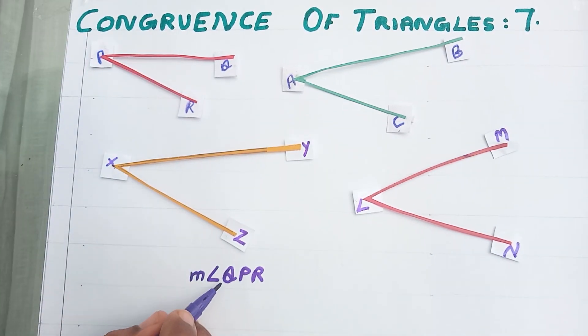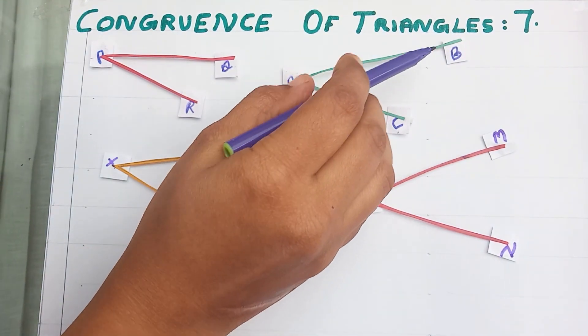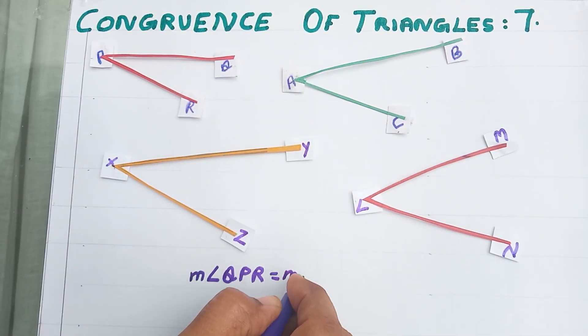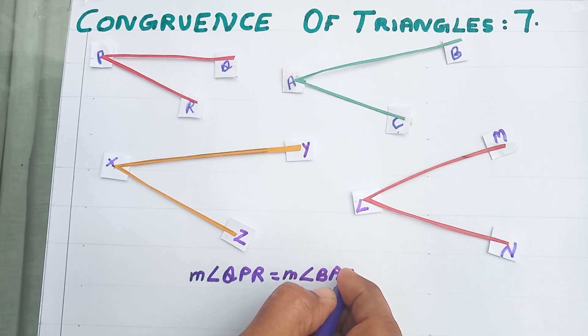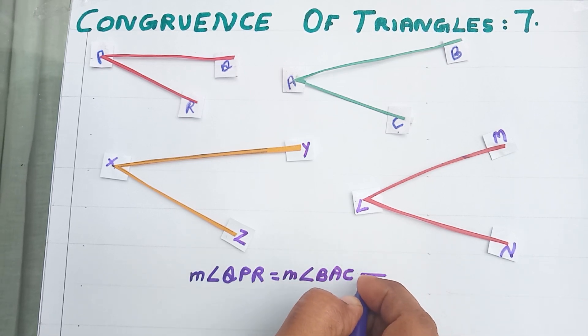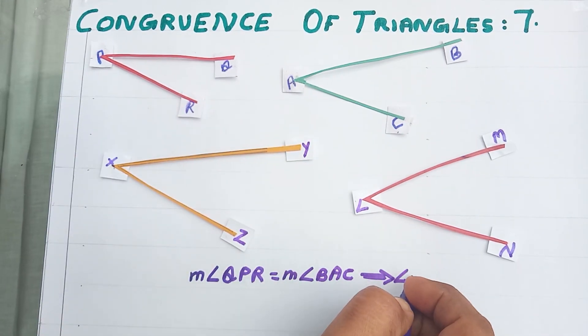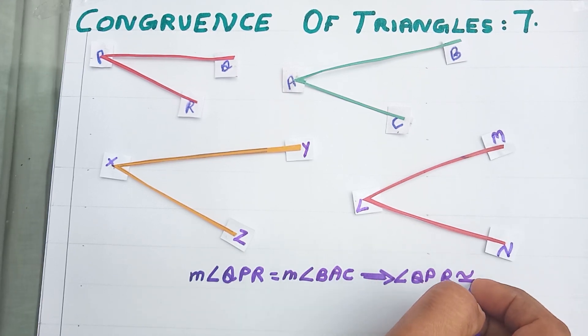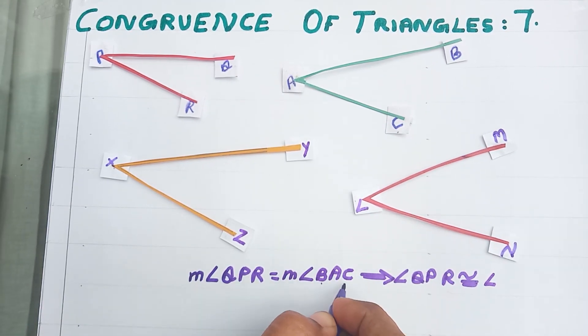Measure of angle QPR is equal to measure of angle BAC. Measure of angle BAC indicates, implies these two angles are congruent. That means angle QPR is congruent to angle BAC.